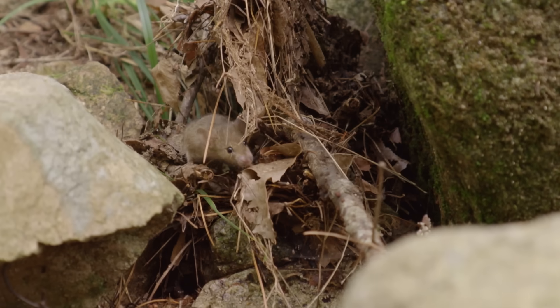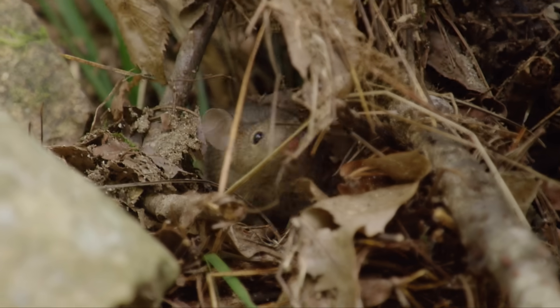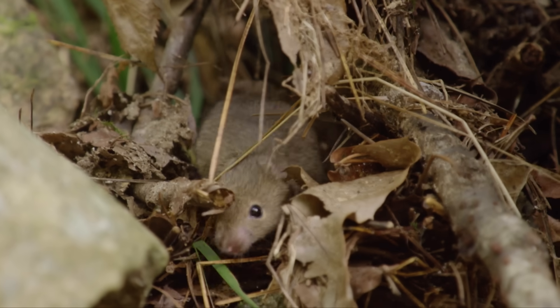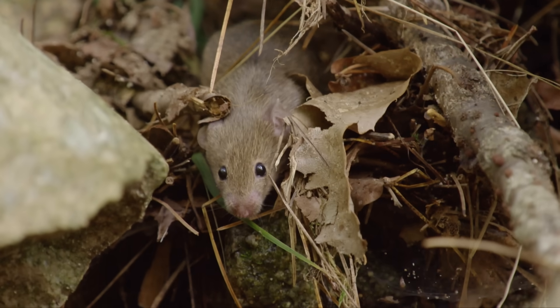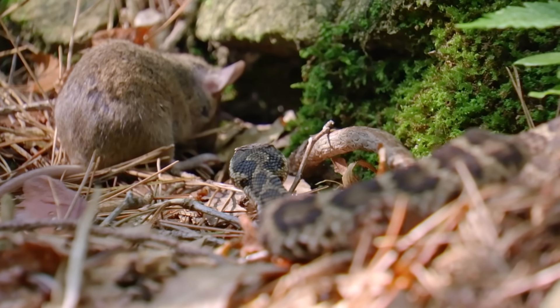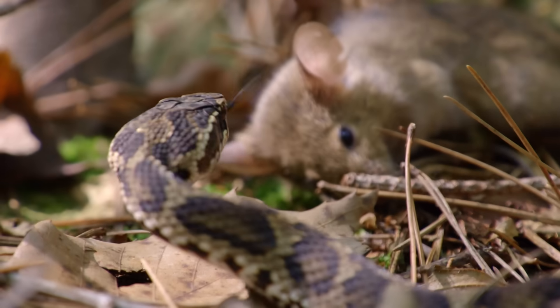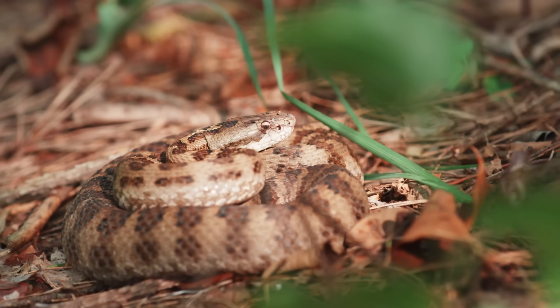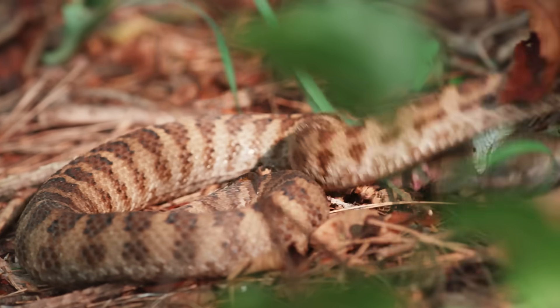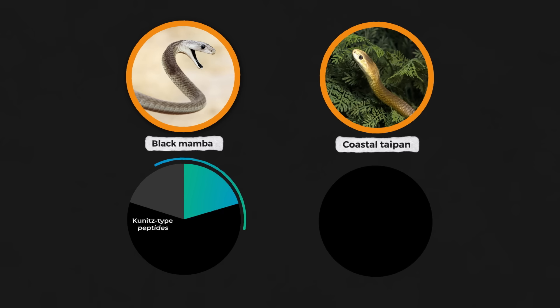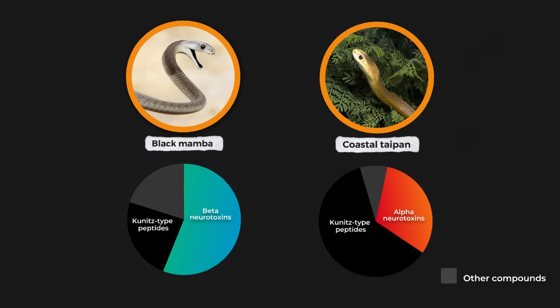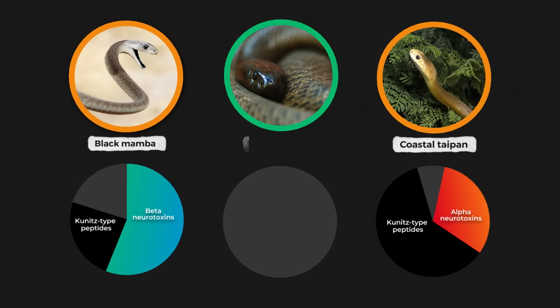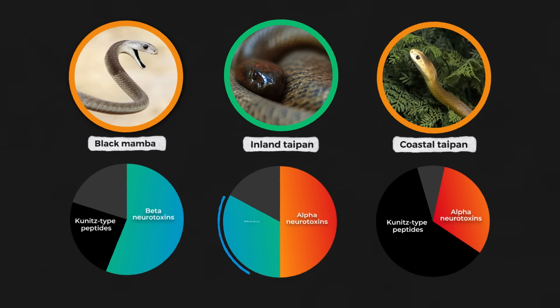But if the animal, by some miracle, manages to survive the bleeding and kidney failure caused by this first set of toxic proteins, there is almost no chance it will survive the effects of the second set, the neurotoxins, the proteins that are primarily responsible for the venom's remarkable lethality. As we saw with black mamba and coastal taipan venom, these toxins are separated into two categories, alpha and beta neurotoxins.